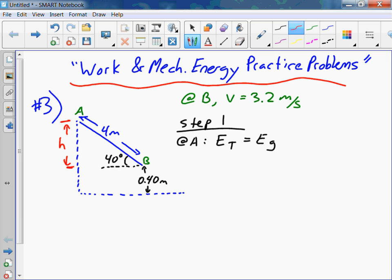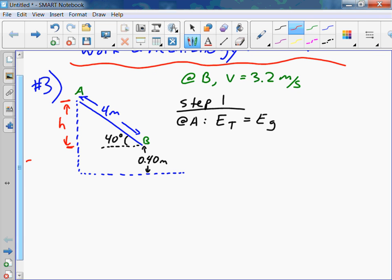So just using some Sohcahtoa trig here. We've got the hypotenuse of the triangle. We're solving for the opposite. Yeah, Sammy, you're right. We're going to use sine. So if we set that up, sine 40 equals h over 4. So h equals 4 sine 40.